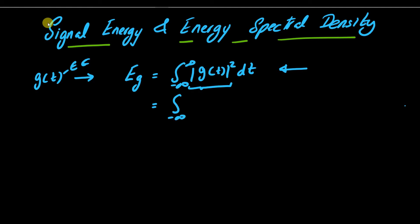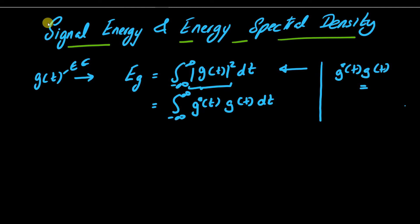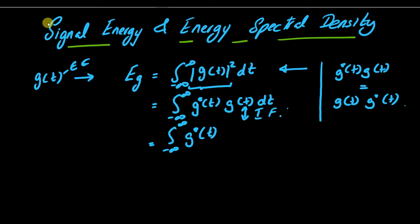We expand this as the integral from minus infinity to infinity of G*(t)·G(t) dt. Since this is a scalar, G*(t)·G(t) is equivalent to G(t)·G*(t). In the third equality we use the definition of the inverse Fourier transform, replacing G(t) with the integral of G(f)·e^(+j2πft) df.